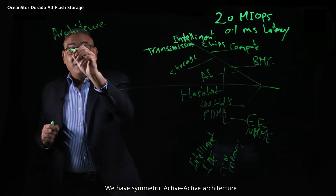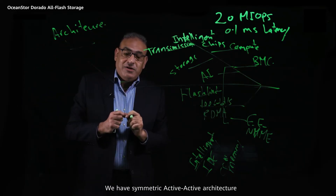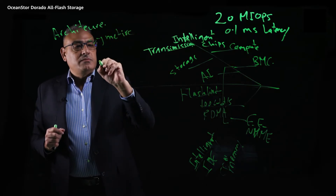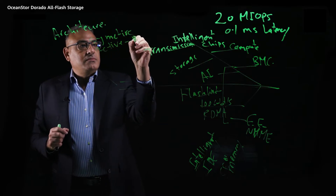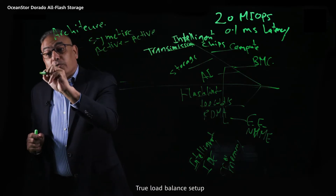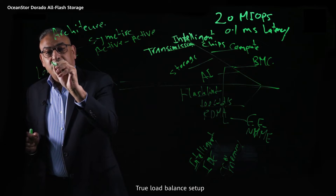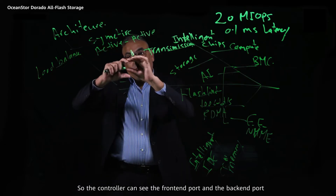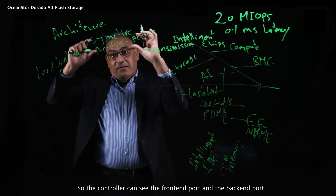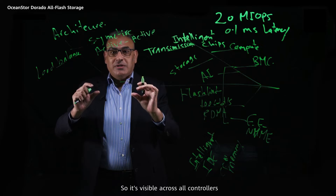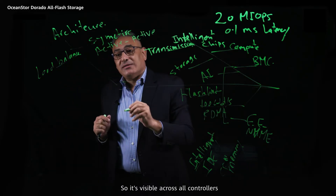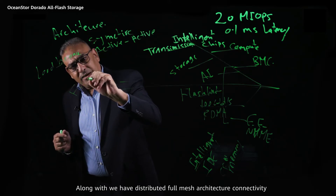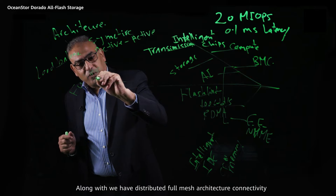The third dimension is architecture. We have a symmetric active-active architecture with true load balancing and full mesh connectivity, so each controller can see both the front-end ports and the back-end ports — visible across all controllers. Along with this, we have a distributed full mesh architecture and connectivity.